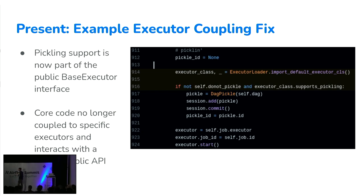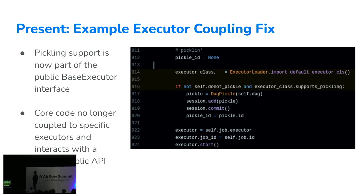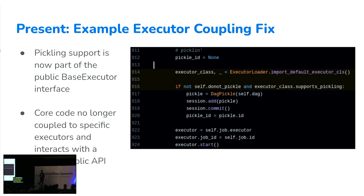This is what the updated code looks like — same backfill, same pickling. But now we're just importing the default executor and asking it, 'do you support pickling?' If so, we pickle. Airflow core code no longer needs to know where the executor came from, who implemented it, or what it's called. It just needs to know: do you implement this interface I know how to communicate with? If so, we're happy.